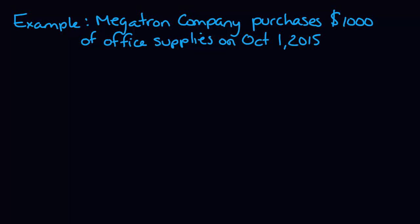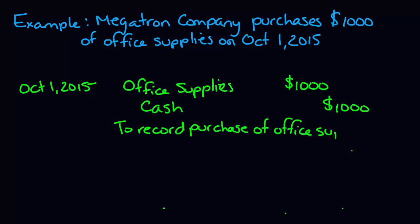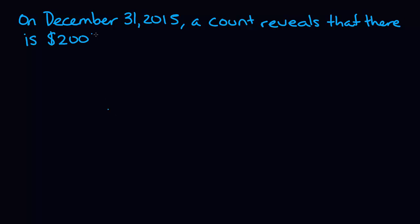We can do the same thing for supplies. In this example, Megatron Company purchases $1,000 worth of office supplies on October 1st, 2015. When Megatron Company actually purchases the supplies on October 1st, our journal entry will be: debit to office supplies for $1,000 and credit to cash for $1,000. At the end of the accounting period — let's say December 31st — someone will do a count of the office supplies and determine how much is left in the supplies cabinet. On December 31st, that count reveals $200 worth of office supplies remaining.